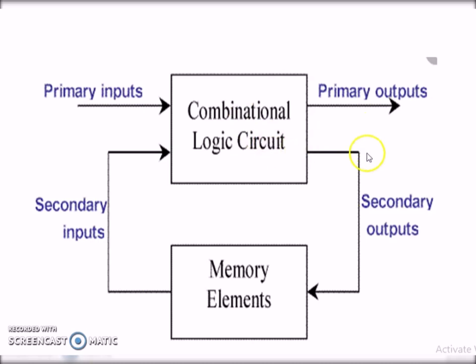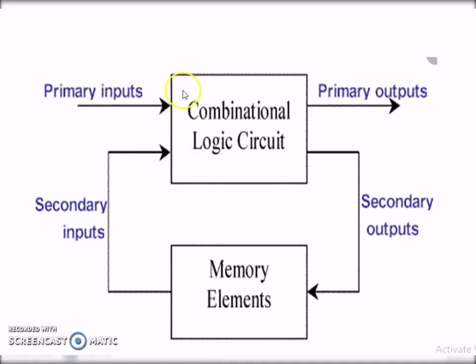So that the value 5 is stored in the memory element, which is given as input to the present combinational circuit along with the new input 1. So 5 is added and the result 6 is obtained.